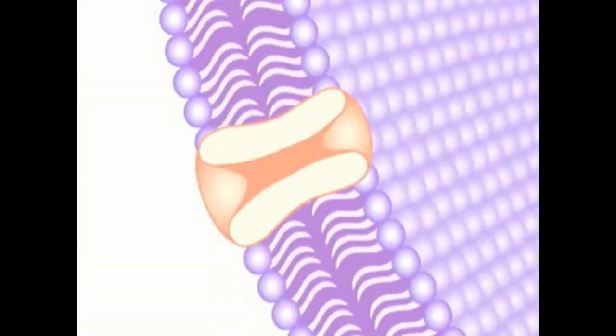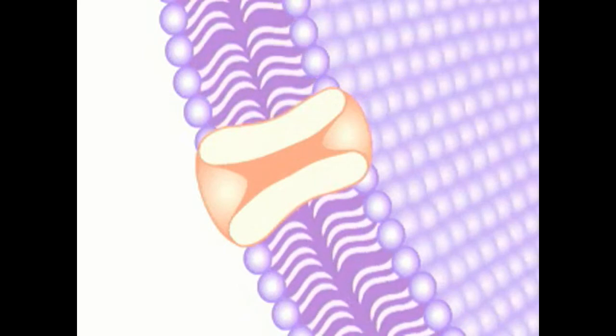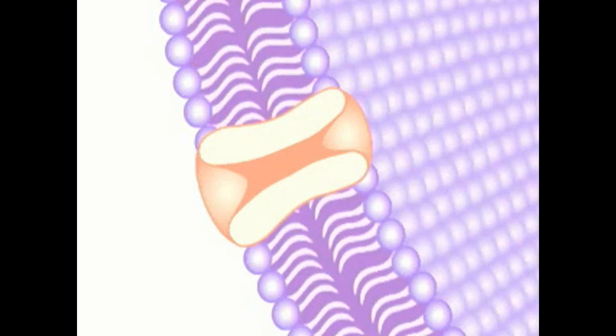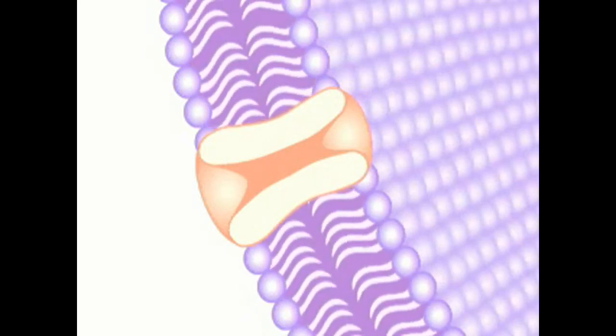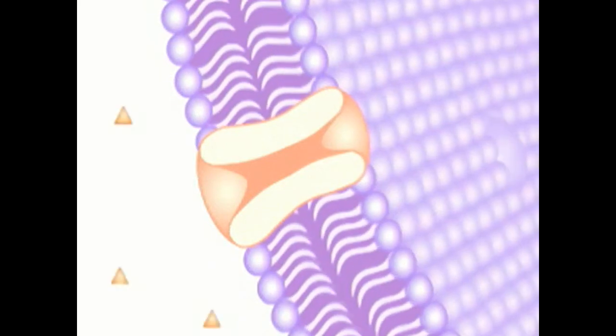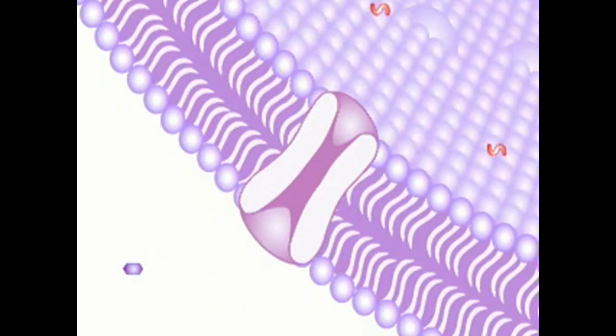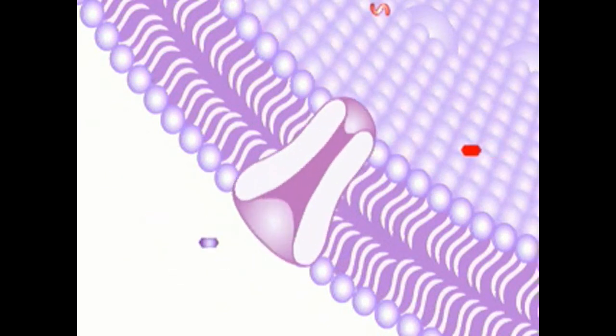The phospholipid molecules that make up the cell membrane are in constant motion. Proteins that help make up the cell membrane perform several important tasks including transporting molecules into and out of the cell. Some proteins act as small pumps, actively transporting molecules from one side of the membrane to the other.